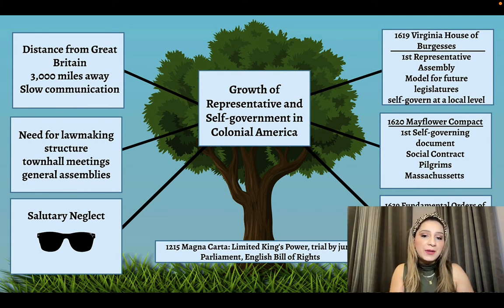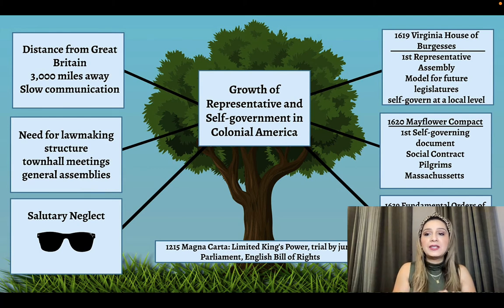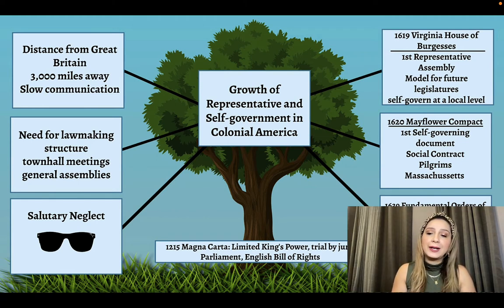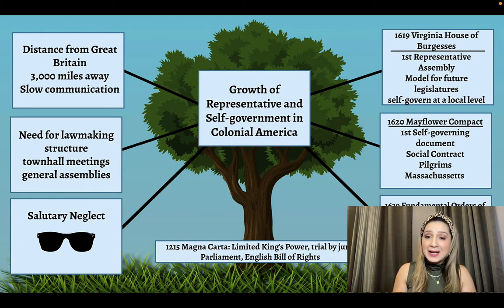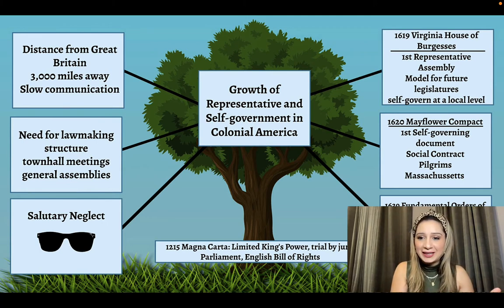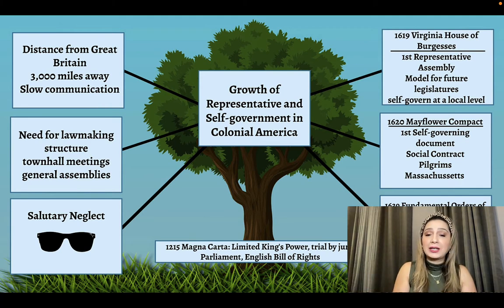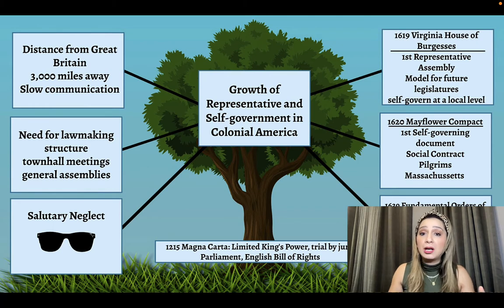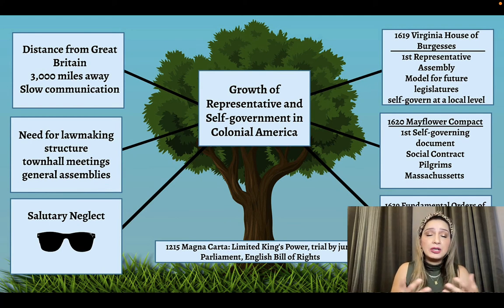So what were some of the things that were created? The Virginia House of Burgesses, which is the first representative assembly; the Mayflower Compact, which was signed by the Pilgrims — the first social contract; and the Fundamental Orders of Connecticut, created by Thomas Hooker after he left Massachusetts and created his own colony for religious freedom. The Fundamental Orders of Connecticut expanded suffrage and voting rights beyond church members. All of these ideas actually came from England from different documents, such as the Magna Carta and the English Bill of Rights.